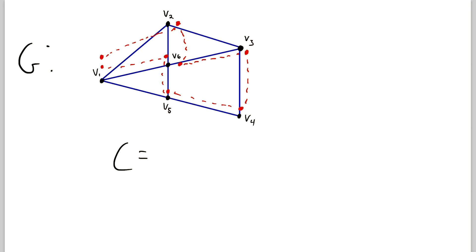We'll call it C for circuit. Then we can describe it as a sequence of vertices in G. Of course, the sequence that we traveled through. So we started at V1. Then we went to V6. Then we went to V5. Then we went to V4. Then we went up to V3. We went back to V6. We went to V2. And then we went back to V1 finishing the circuit where we started.